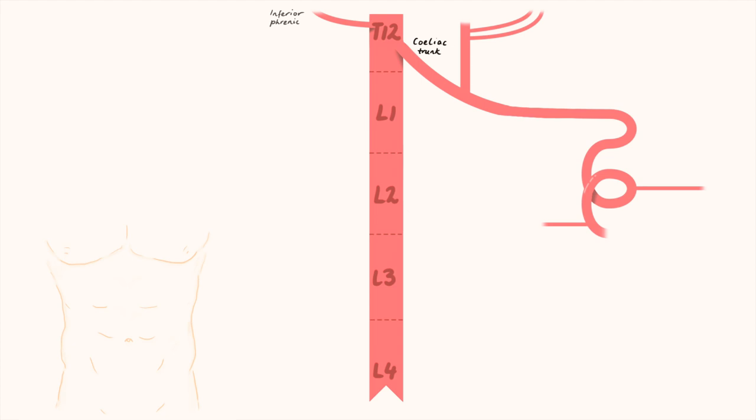What three main arteries does it send off? One that follows a coiled path over the pancreas, the splenic artery. One which goes straight to the stomach, the left gastric artery. And one which runs to the liver, the common hepatic artery.